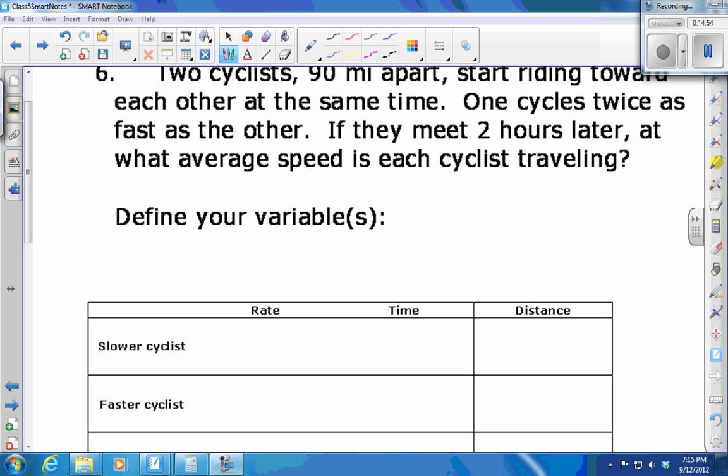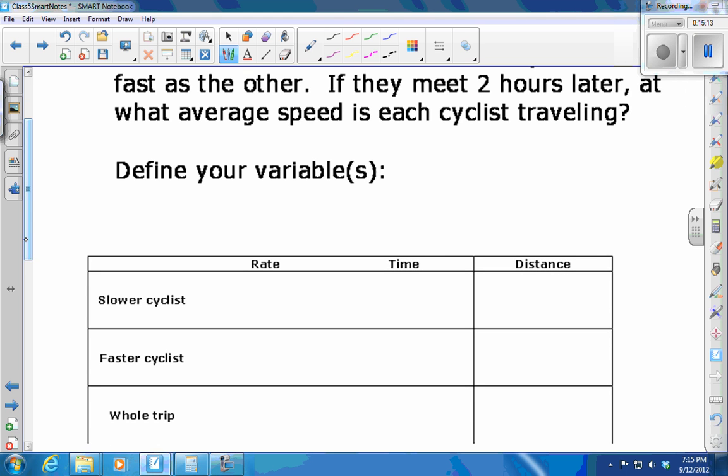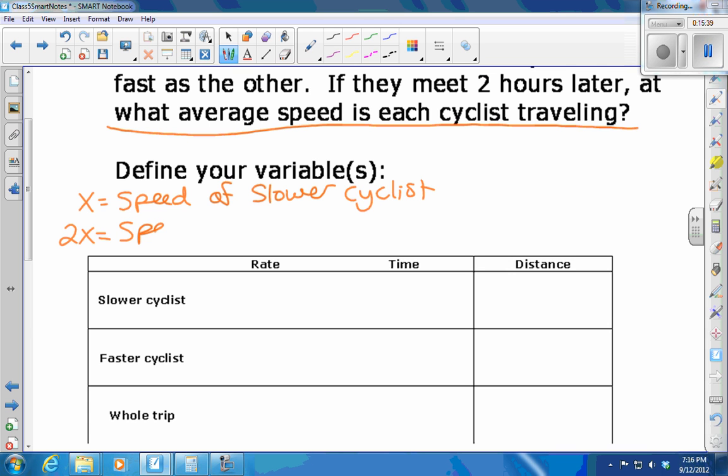In this one, we have two cyclists that are 90 miles apart. They're riding towards each other. They start at the same time. One is cycling twice as fast as the other, and they meet two hours later. What is the average speed of each cyclist? We're going to define our variables based on the question. Average speed of each cyclist. So we could let x be the speed of one of the cyclists. Let's just have it be the slower. Then what's the speed of the faster cyclists? 2x, because they're going twice as fast.